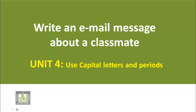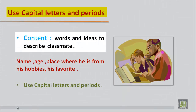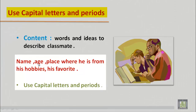Dear students, today we will practice how to write an email message about a classmate, and you will also learn how to use capital letters and periods. When we write an email, first we should have some ideas about what we are going to write. Since you have to write this email about your classmate, you should know his name, his age, the place where he is from, his hobbies, and his favorite things like his favorite food or favorite books.